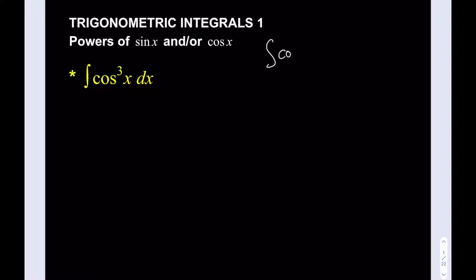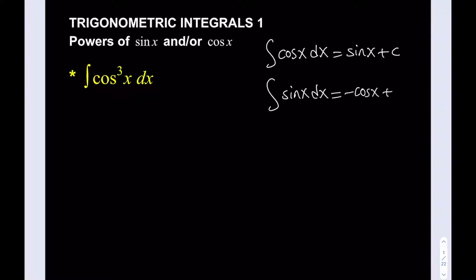Let me remind you: the integral of cosine x dx to the first power is going to be sine x plus c. This comes from the fact that the derivative of sine x is cosine. And the integral of sine x dx is going to be negative cosine of x plus c, because the derivative of cosine is negative sine — so the derivative of negative cosine is positive sine.